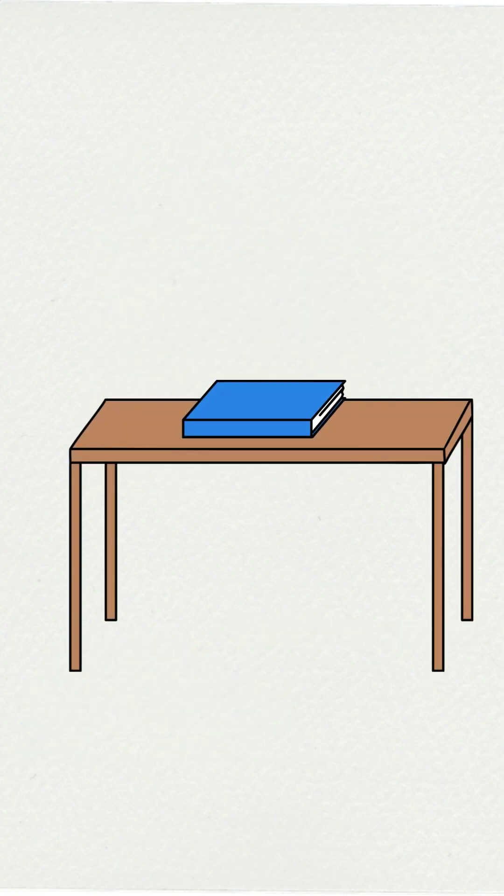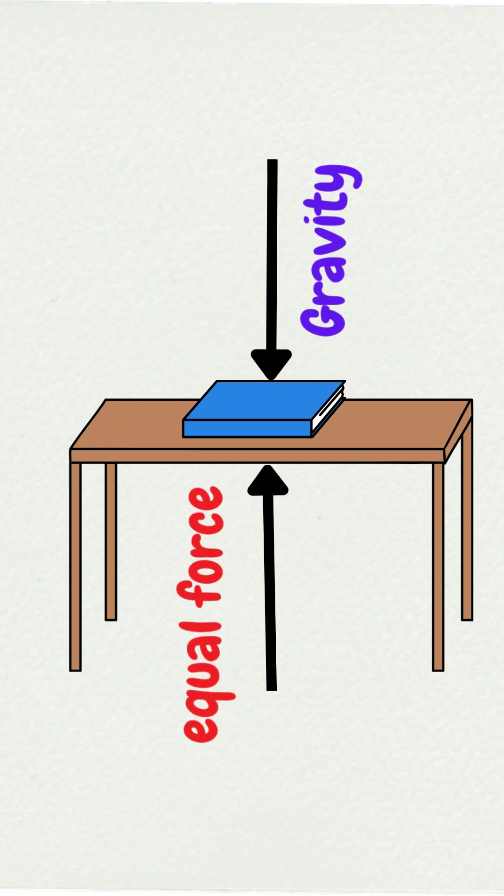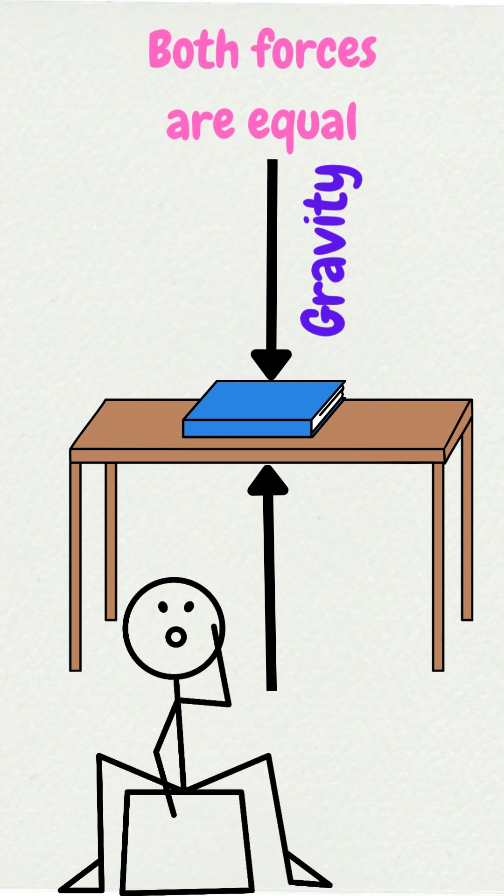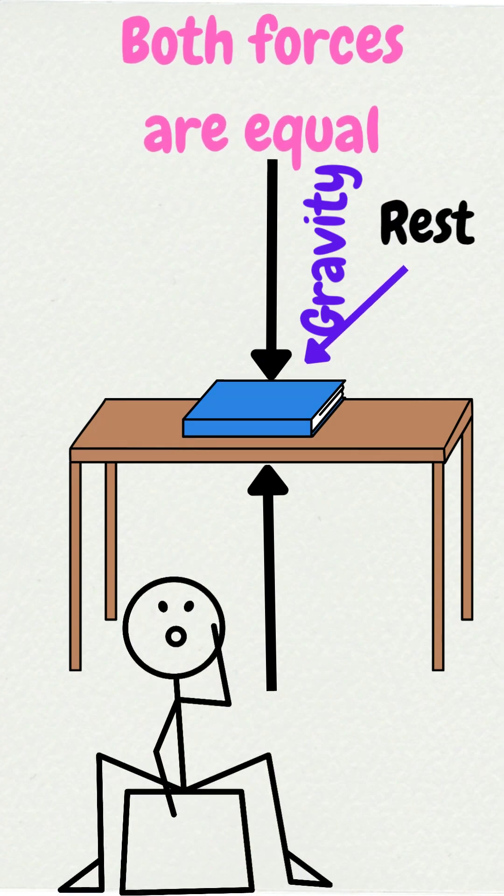For example, a book resting on a table: gravity pulls the book downward, the table applies an equal upward force, normal reaction. Forces are equal so the book stays at rest. It will maintain its state of rest.